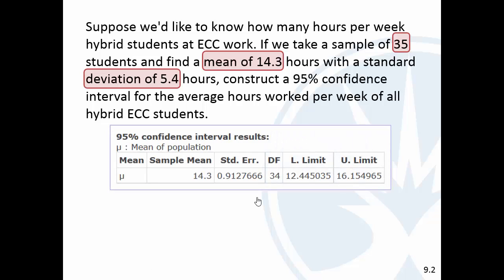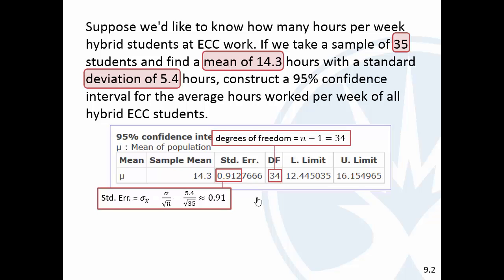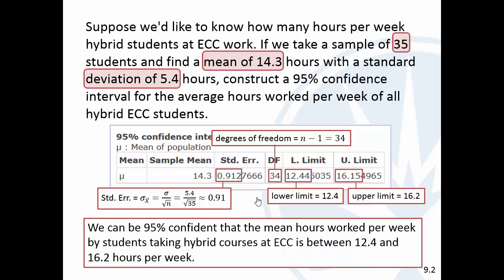So, let's talk about what these things mean here. The standard error, sometimes people confuse that with the standard deviation, that actually is the standard deviation of the sample mean. That's sigma x-bar, and so that's about 0.91. It's not relevant here in our discussion, but that's the standard error that's computed here. The degrees of freedom, df, that's n-1, so 35-1, and then you have your lower limit, which will round, just like the mean was, to one place more than the data. So, the mean was 14.3, we'll round to 12.4, and then the upper limit, we'd round to 16.2. So, we can be 95% confident that the mean hours worked per week, between 12.4 and 16.2 hours.